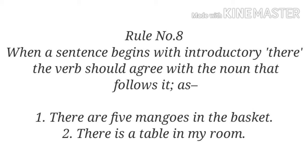Rule number eight: when a sentence begins with introductory 'there', the verb should agree with the noun that follows it. For example, 'There are five mangoes in the basket' — 'mangoes' is plural, so the plural verb 'are' is used. Example two: 'There is a table in my room' — 'table' is singular, so the singular verb 'is' is used accordingly.